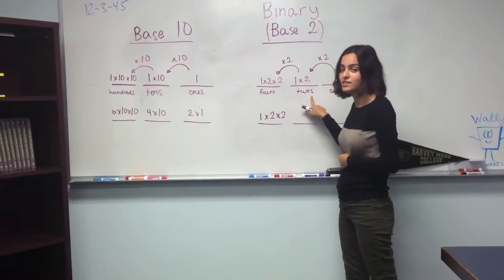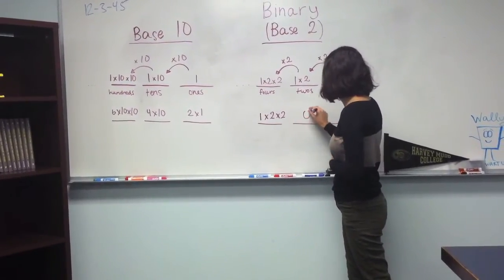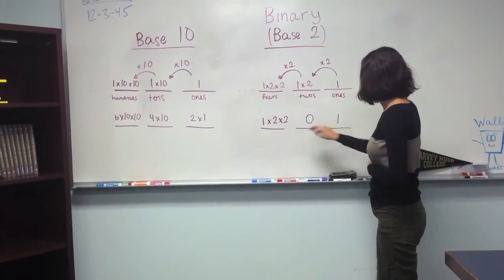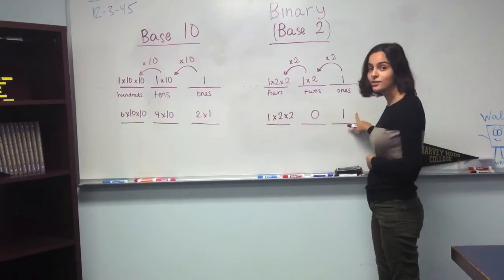So we can't use a 2, because 2 is larger than 1. So if we used a 2, we'd get 6, and we don't want that. So we put a 0 here. And so all we're left with is a 1. So now we have 4 plus 1, which gives us 5.